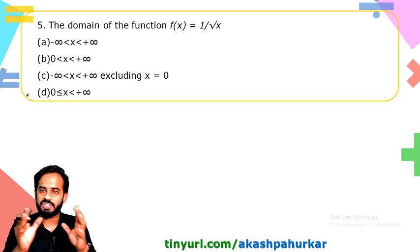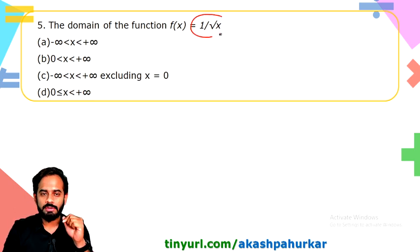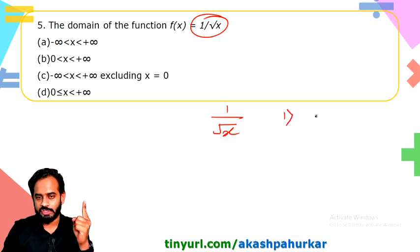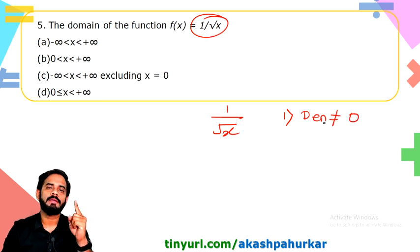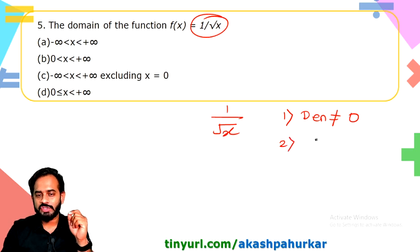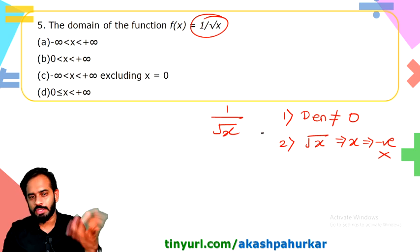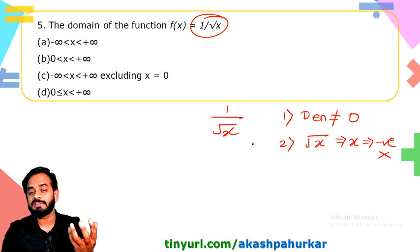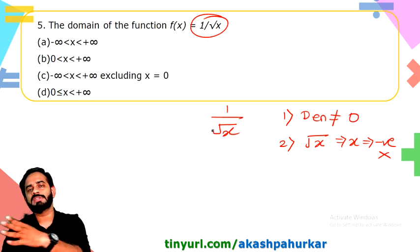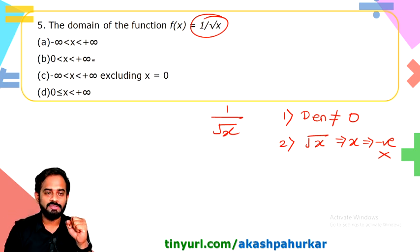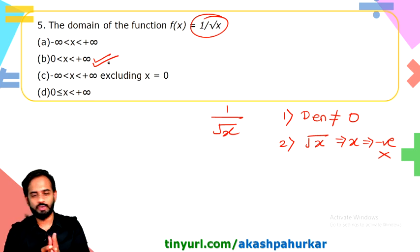The fifth question asks for the domain of the function 1/√x. There are two conditions: first, the denominator can never be zero; second, under a square root, x cannot be negative. So x must be strictly greater than zero. The correct answer is option B.